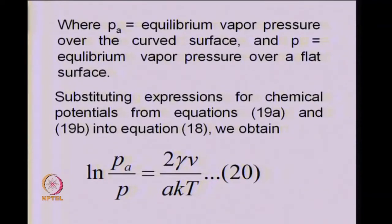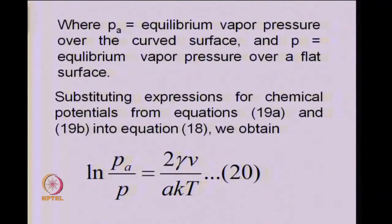Here p_a and p respectively stand for the equilibrium vapour pressures for the curved surface and the flat surface. Everything on the right-hand side is positive, so the implication is that the vapour pressure p_a is greater than vapour pressure p. When you go from a flat surface to a curved surface, there is an increase in the vapour pressure.